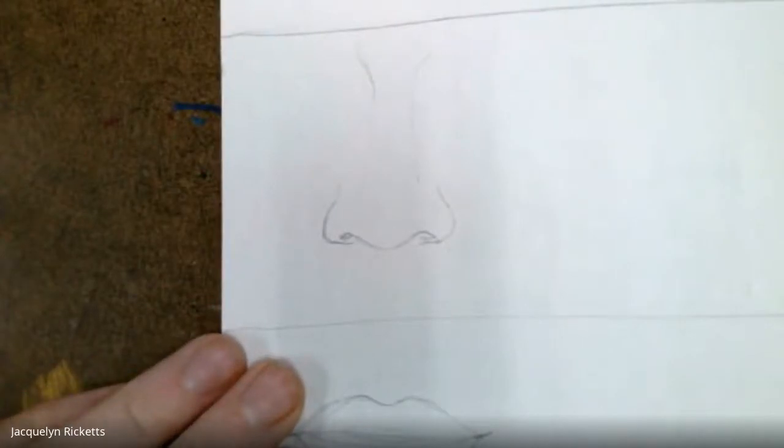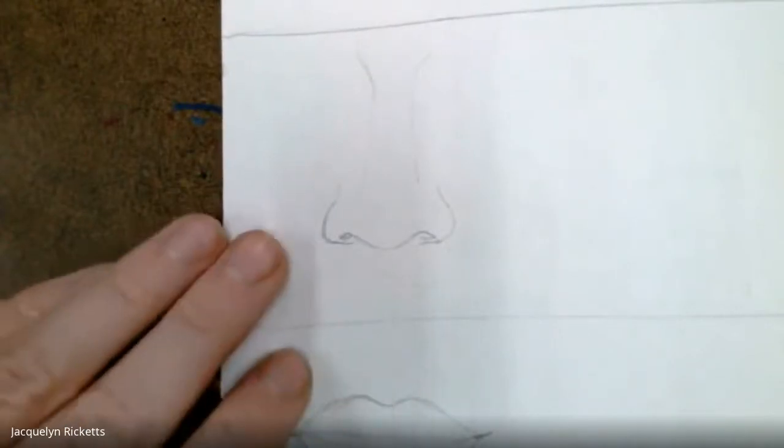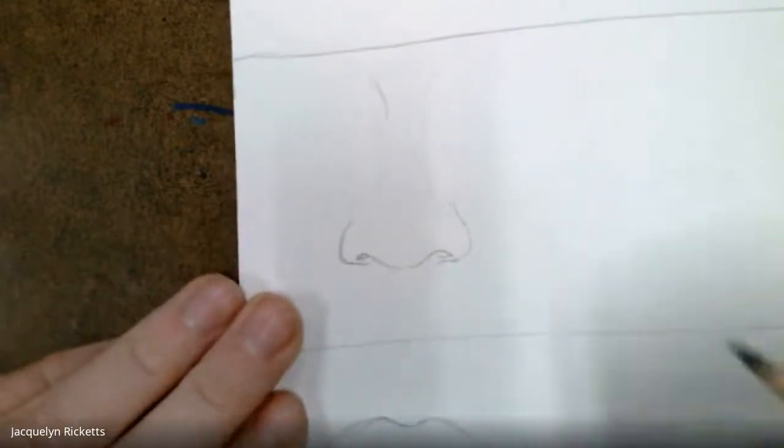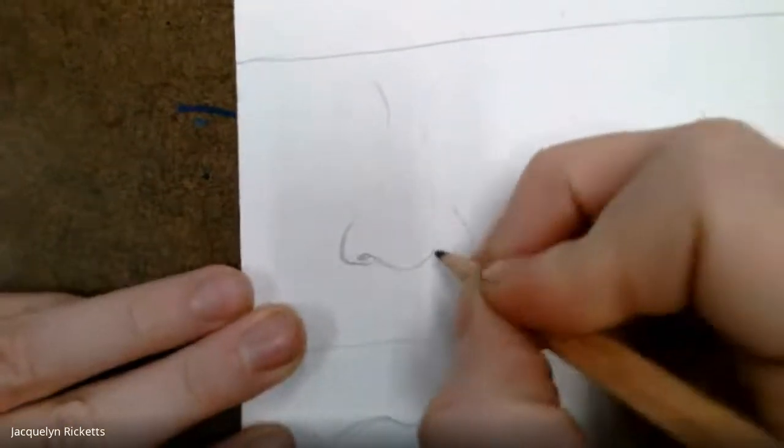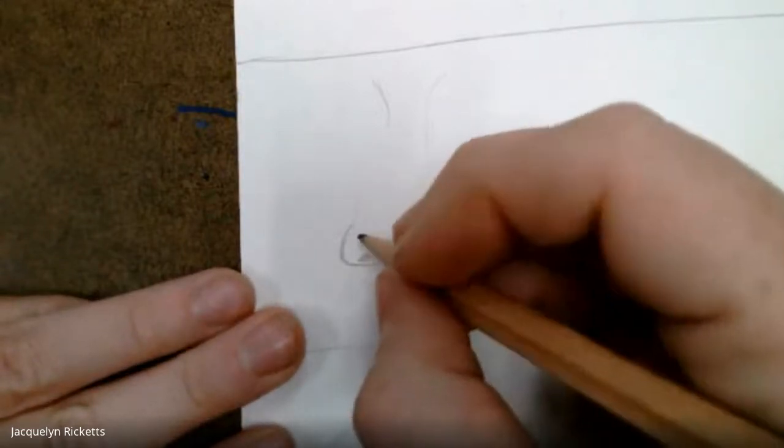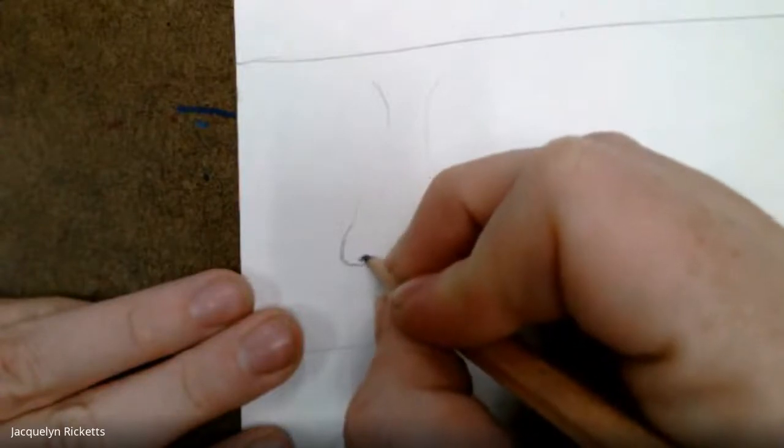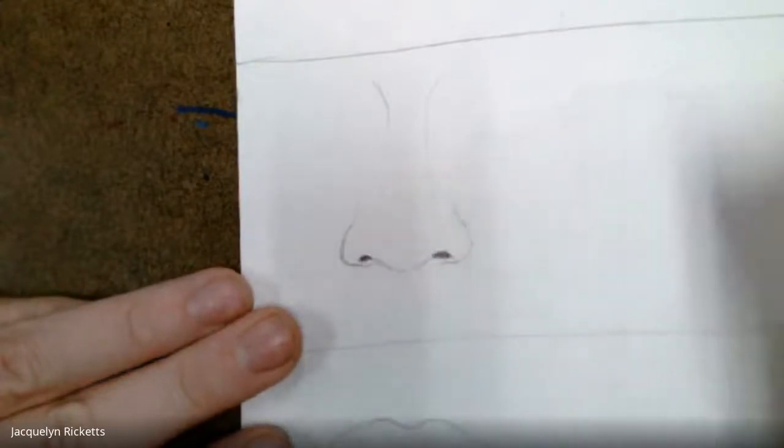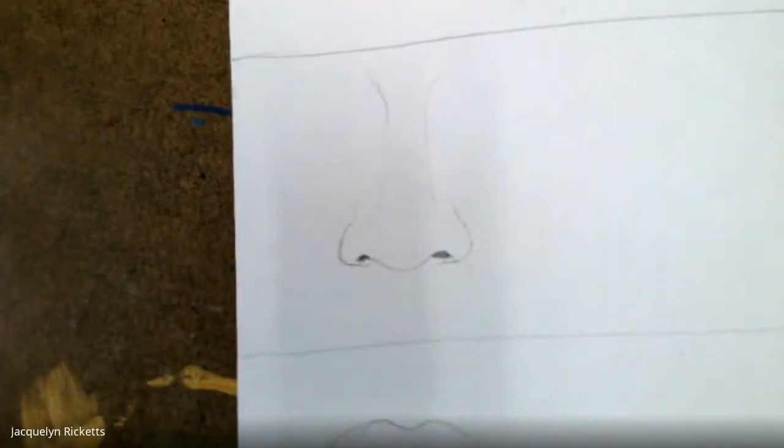One thing I like to do when I'm starting off with value is I like to start with my darker areas. With the nose, that's always our nostril here. I'm looking and I'm kind of filling those in nice and dark because that's the darkest point in my drawing.